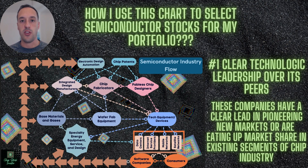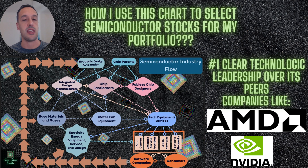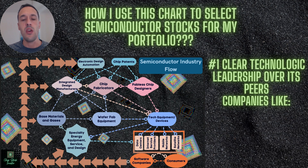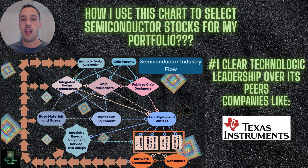So how do I use this chart to select semiconductor stocks for my portfolio? There are two basic categories of companies I'm looking for. The first is a company that has some sort of technological leadership over its peers — the high-growth, sexy names that get all the attention. Fabless chip designers like NVIDIA and AMD have a clear-cut lead, pioneering new markets or eating up market share. Or it might be a chip fab like Taiwan Semi, which has clear manufacturing leadership far beyond what Samsung and Intel can currently do, or an IDM like Texas Instruments.